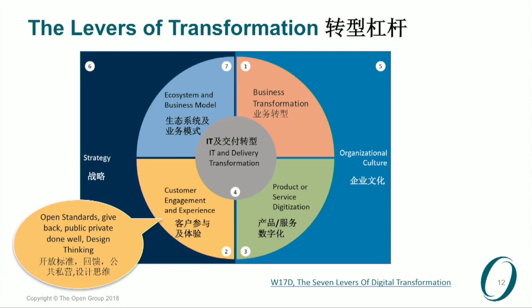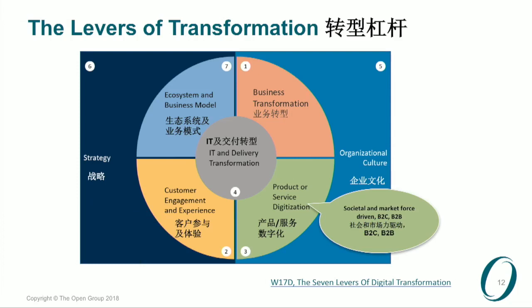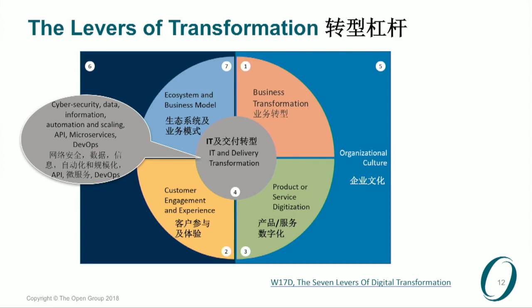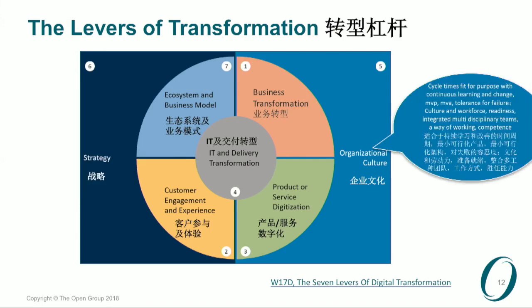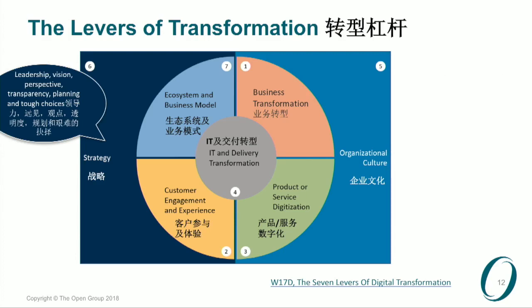At the customer engagement and experience level: open standards, public-private partnerships done well, design thinking, product-to-service digitalization, societal and market-force driven. Cybersecurity, data information, automation, scaling, APIs, microservices, and DevOps are exposed out of the core IT function to other areas and ecosystems. We have cycle times fit for purpose, cultural workforce issues, and multidisciplinary teams. Before we were talking about digital transformation, we used to talk about these same issues in the EA space — the first few pages of TOGAF tell you this is one of the primary things to pay attention to. Leadership, vision, perspective, transparency, planning, and tough choices made well at the leadership level.